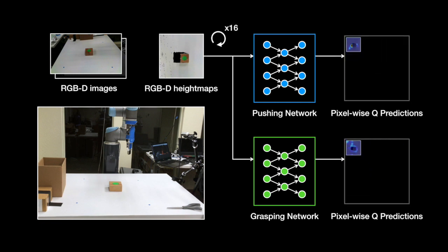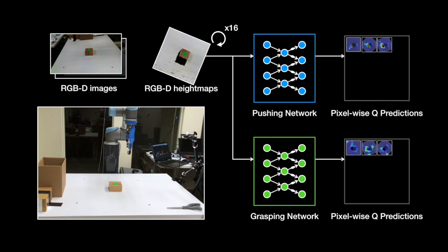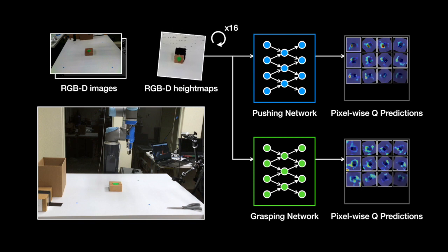To make predictions for different grasping orientations and pushing directions, we rotate the height maps by 16 different angles before feeding into the network, in order to generate a set of 16 pixel-wise Q value maps. This effectively gives us value predictions for 16 different pushing directions and grasping angles for every visible location in the robot workspace.